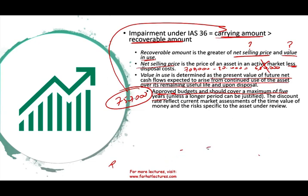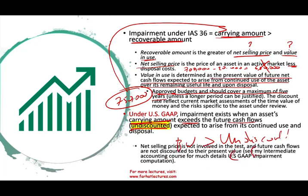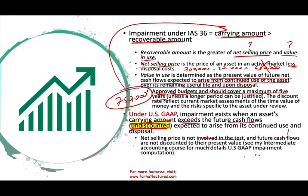Under US GAAP, an impairment exists when the asset book value exceeds future cash flows that are undiscounted — not discounted to present value. The net selling price is not involved in this test. If you're interested in US GAAP, please see my intermediate accounting course, chapter 12, where I have over an hour on asset impairment under US GAAP.